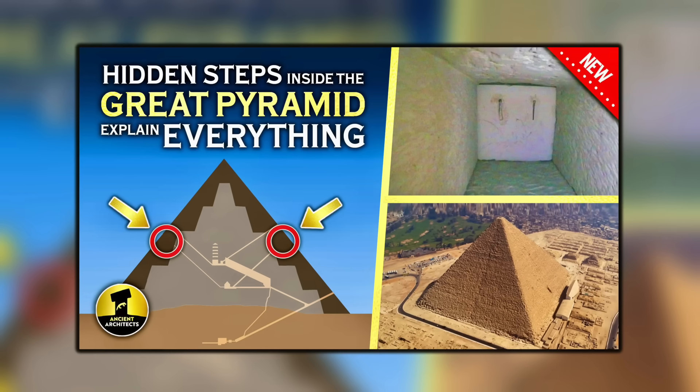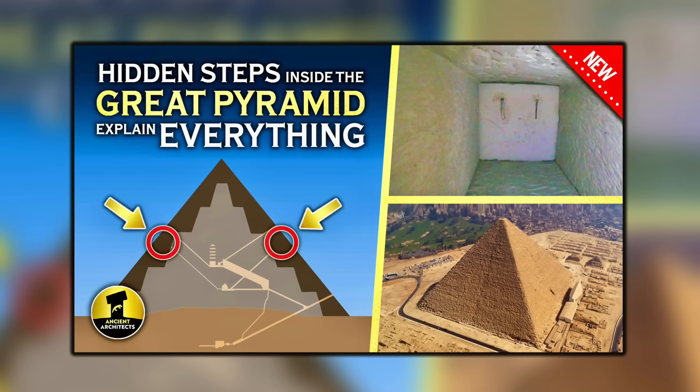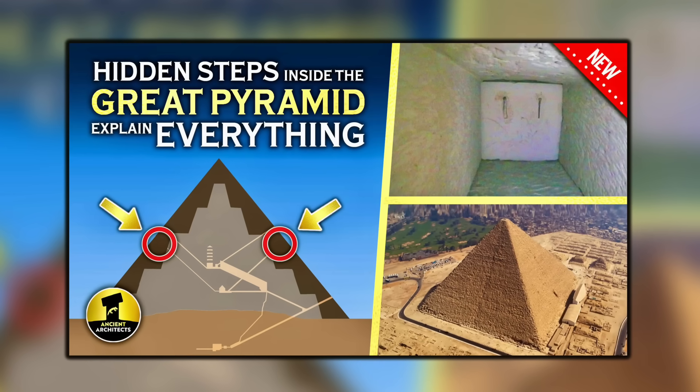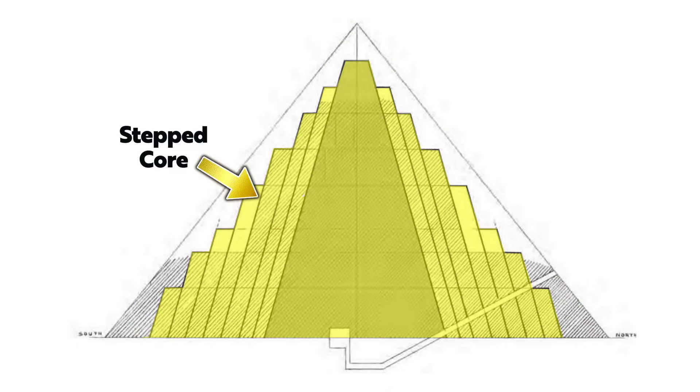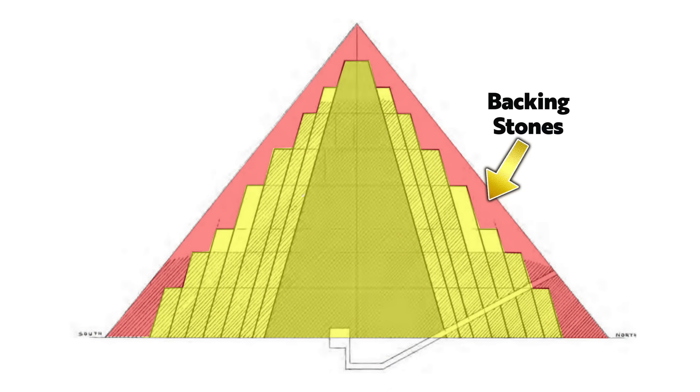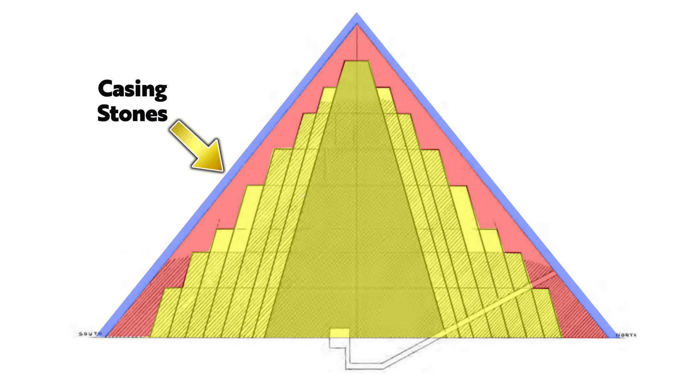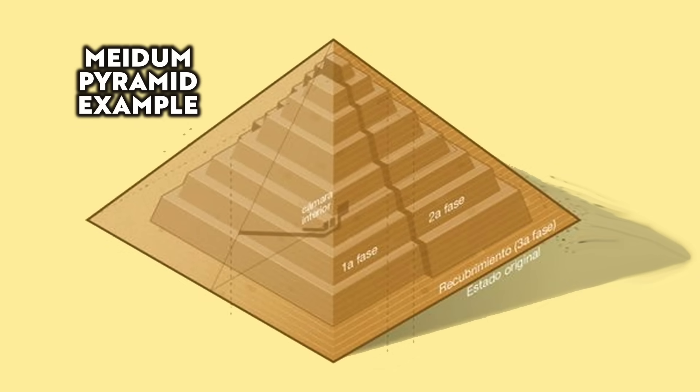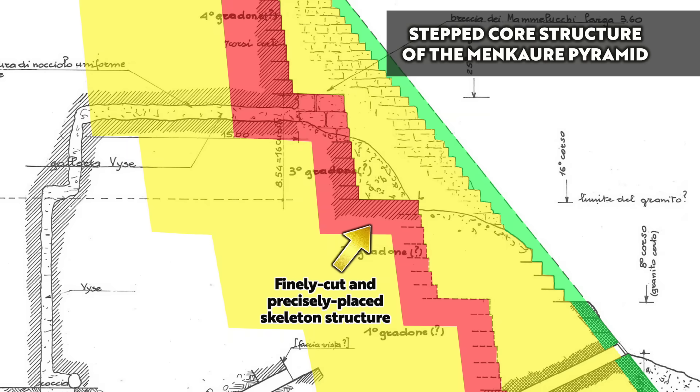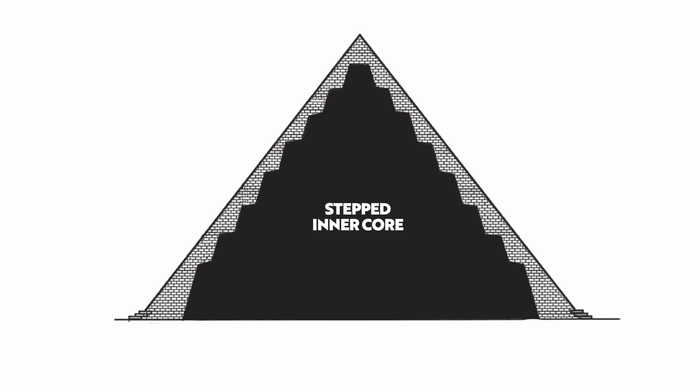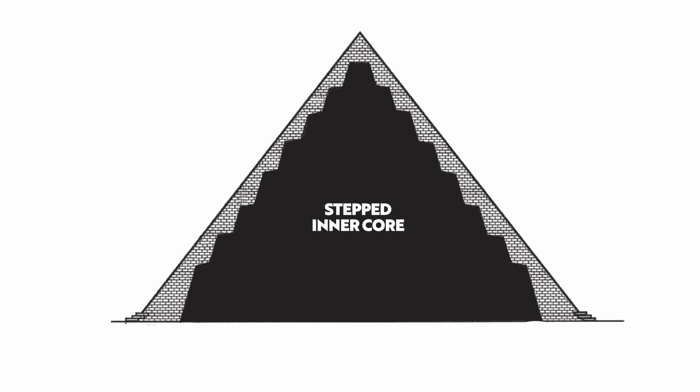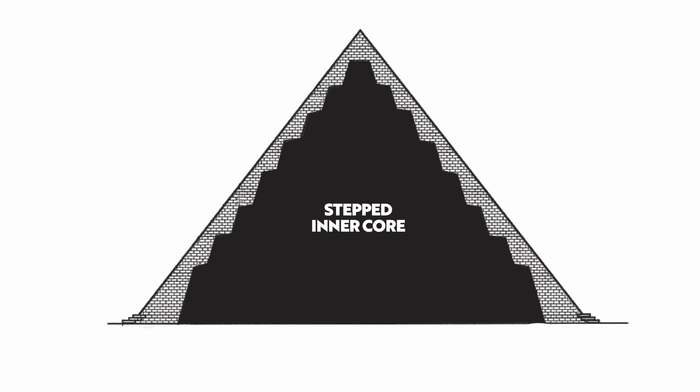In my last video I discussed the internal structure of pyramids from Egypt's 4th dynasty, how they have a stepped core structure, on top of which are placed backing stones, and on top of which are placed the fine Tura limestone casing stones. The internal structure of pyramids is rarely discussed on the internet, it is an understudied subject, but it's hugely important if you really want to understand the finer details and anomalies of the Great Pyramid.